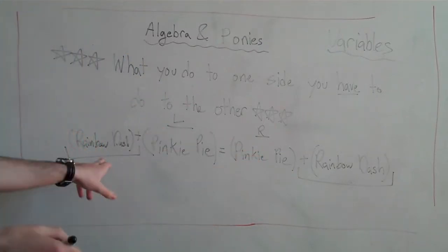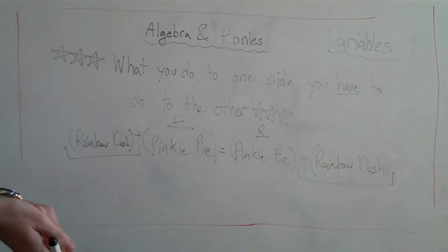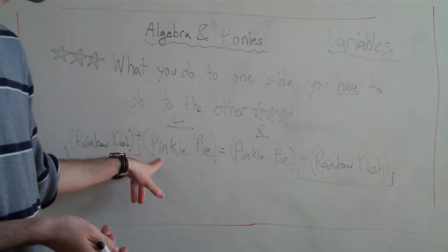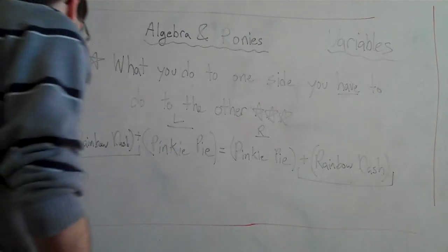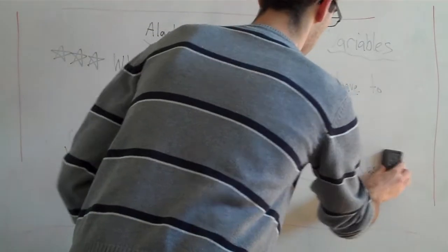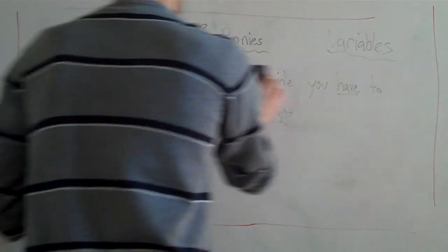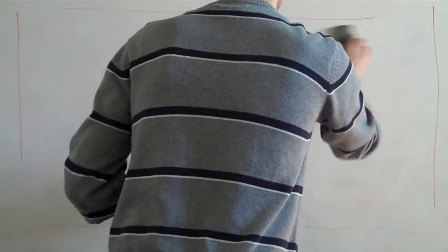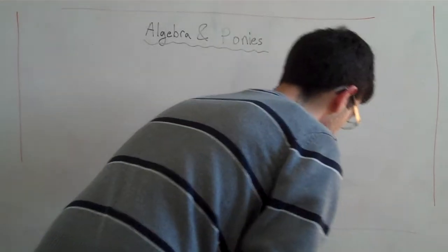Now, no matter what Rainbow Dash is — positive, negative, zero — is this side the same as this side? Yes. Excellent. Okay, let's use some real numbers. I'm going to do two examples and we're done.